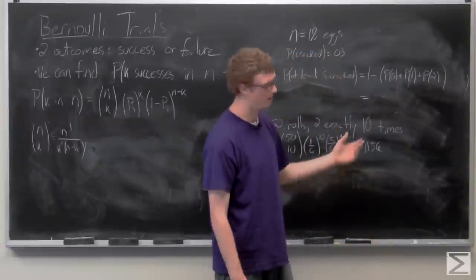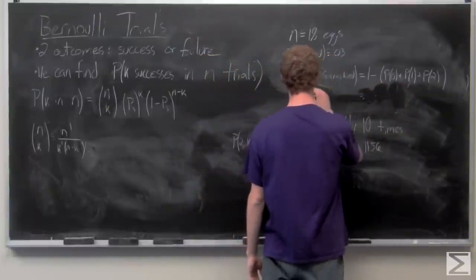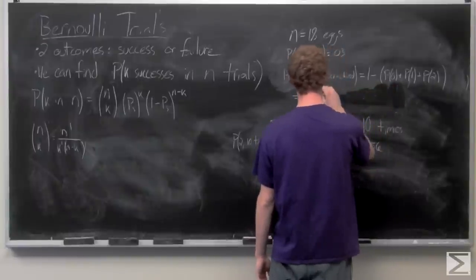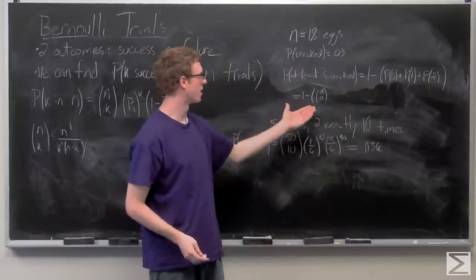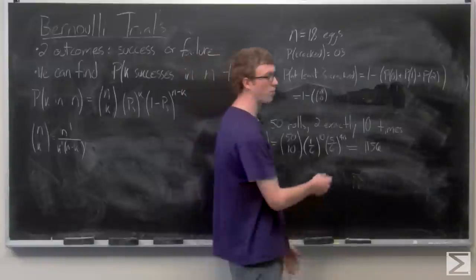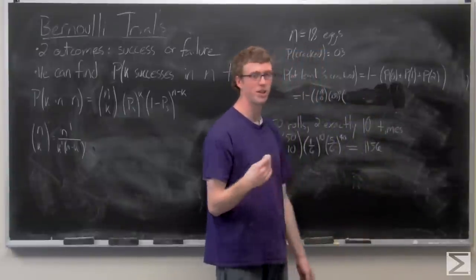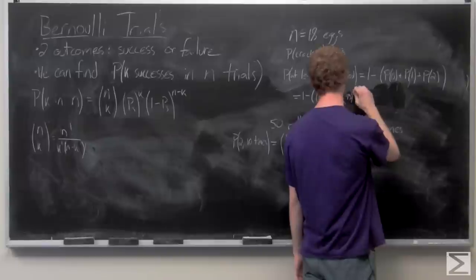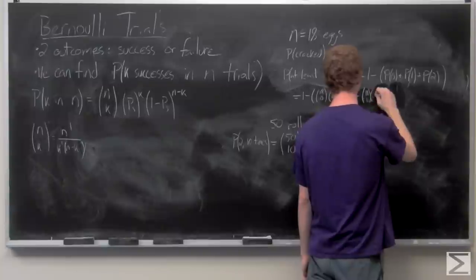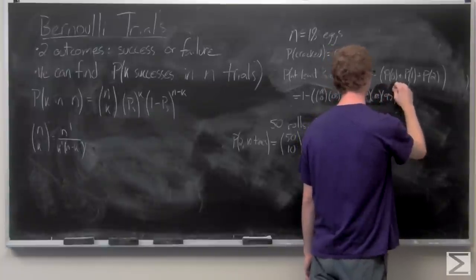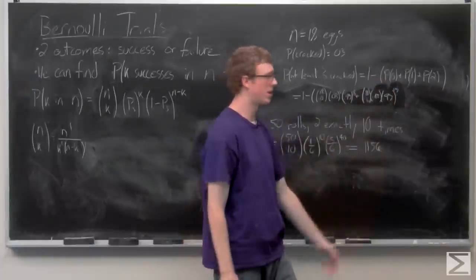Each of these uses this binomial distribution. So for the zero eggs being cracked, we're not really going to need to do 18 choose zero, because that's just one, or 0.03 to the zero, because that's also one. It's just 0.97, the probability that none are cracked, to the 18th. So for one being cracked, we have 18 choose one times 0.03 to the first times 0.97 to the 17th.